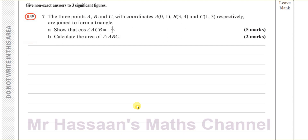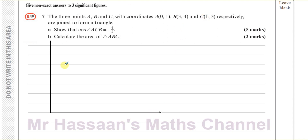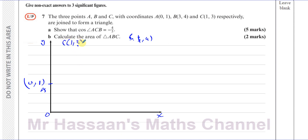For this question, I'm going to draw a pair of axes to make things clearer. Since all values are positive, we only need the positive side. A is at (0,1), B is at (3,4) — somewhere up here — and C is at (1,3). It's not to scale, just a little sketch to give us an idea of this triangle.